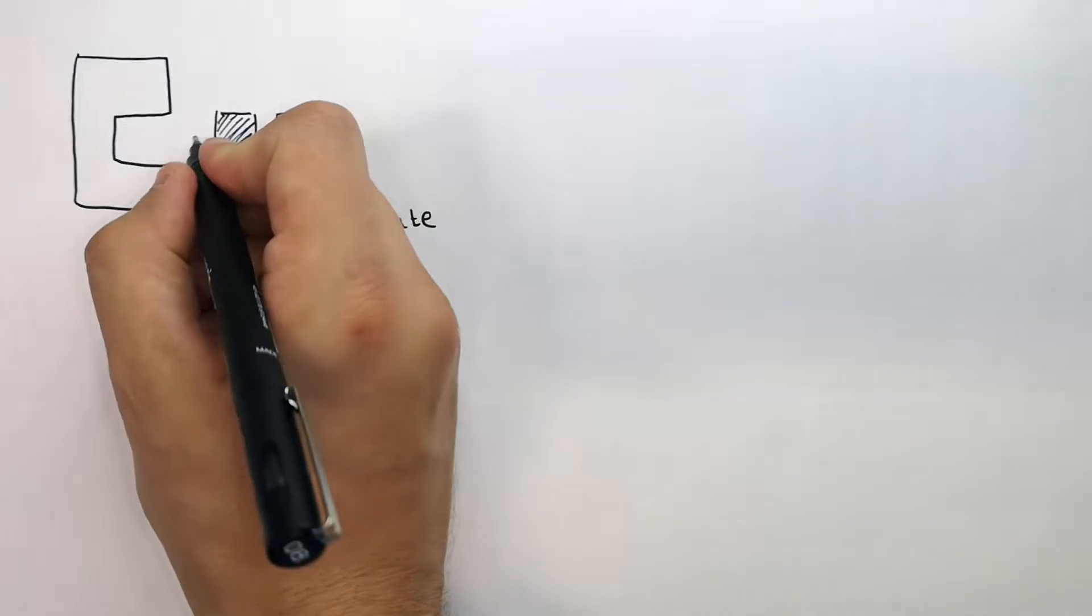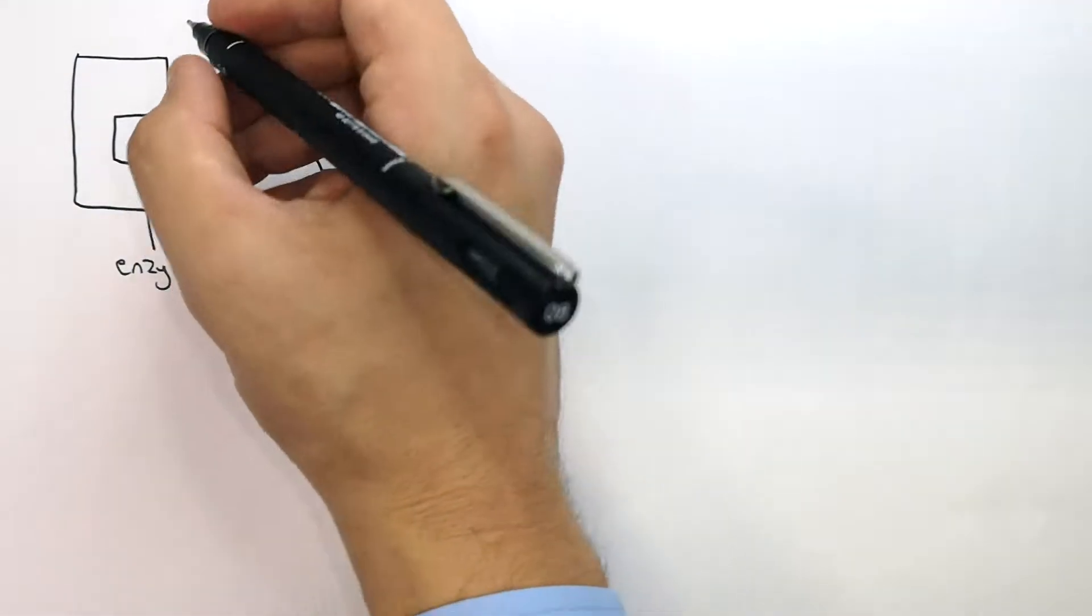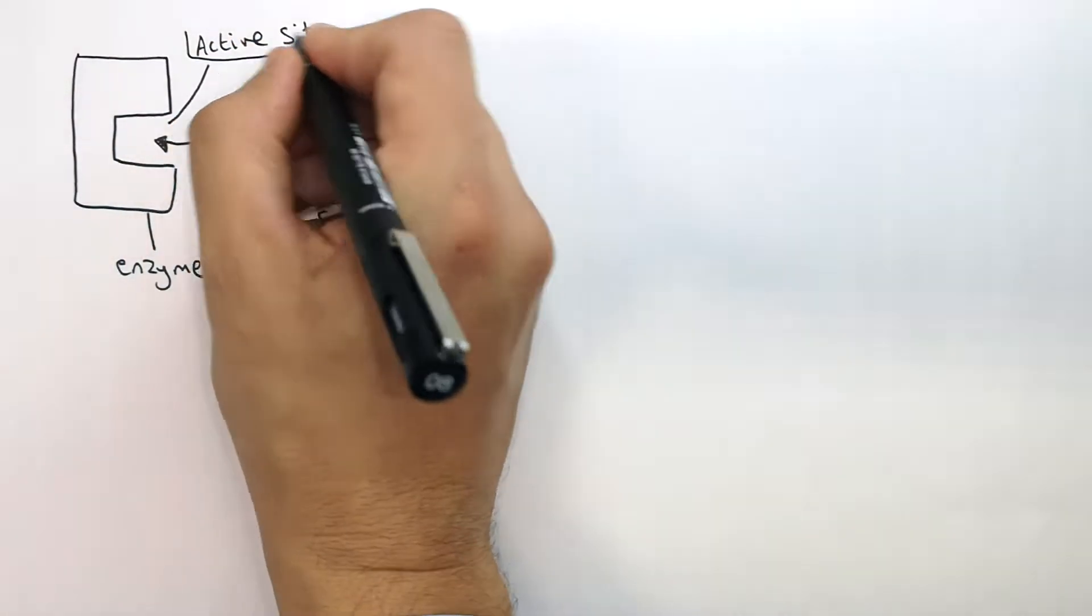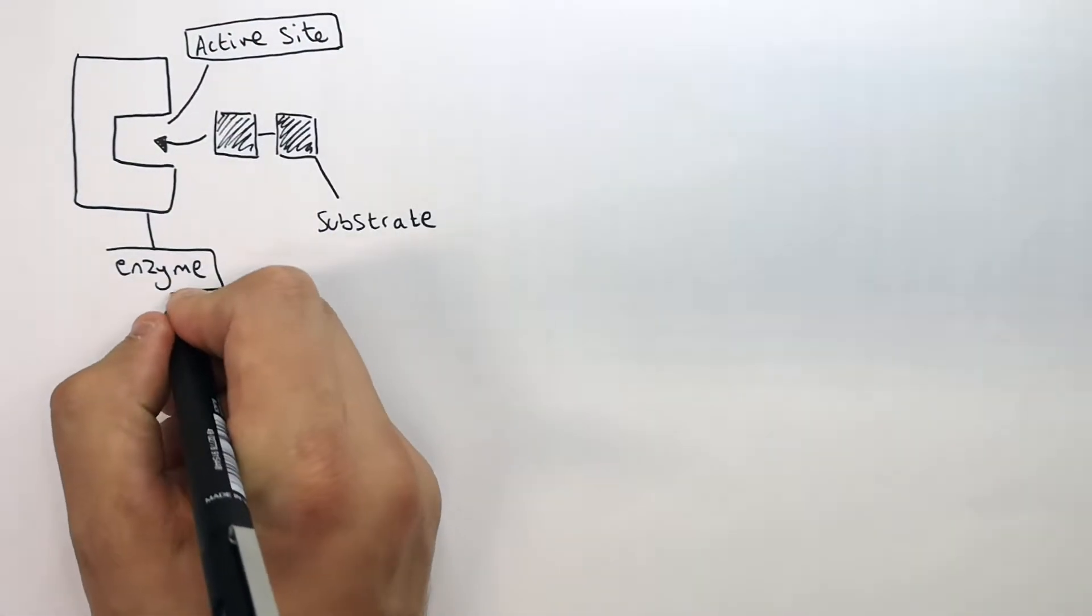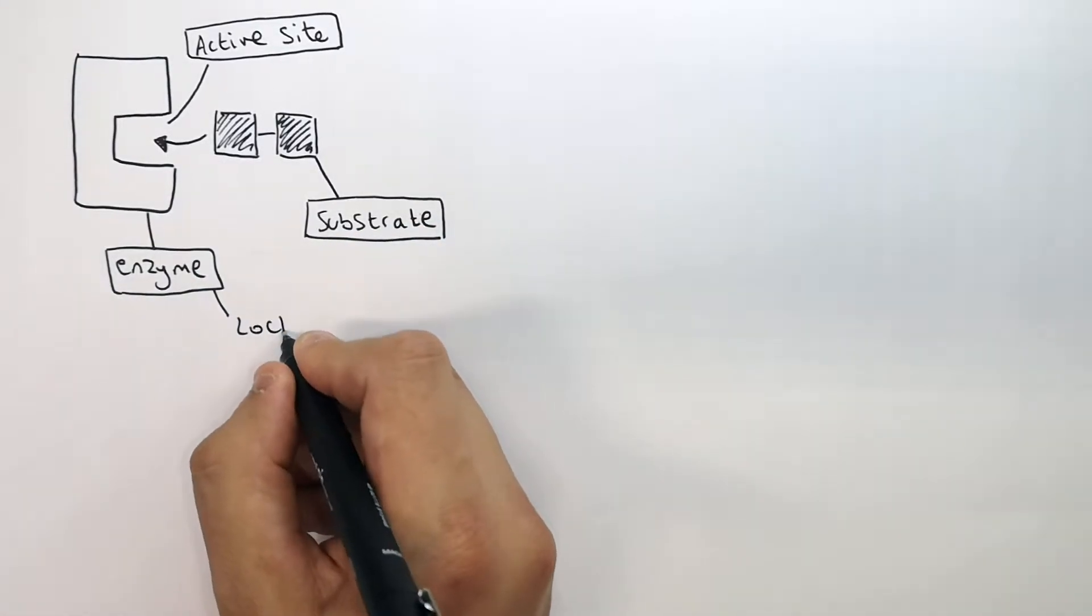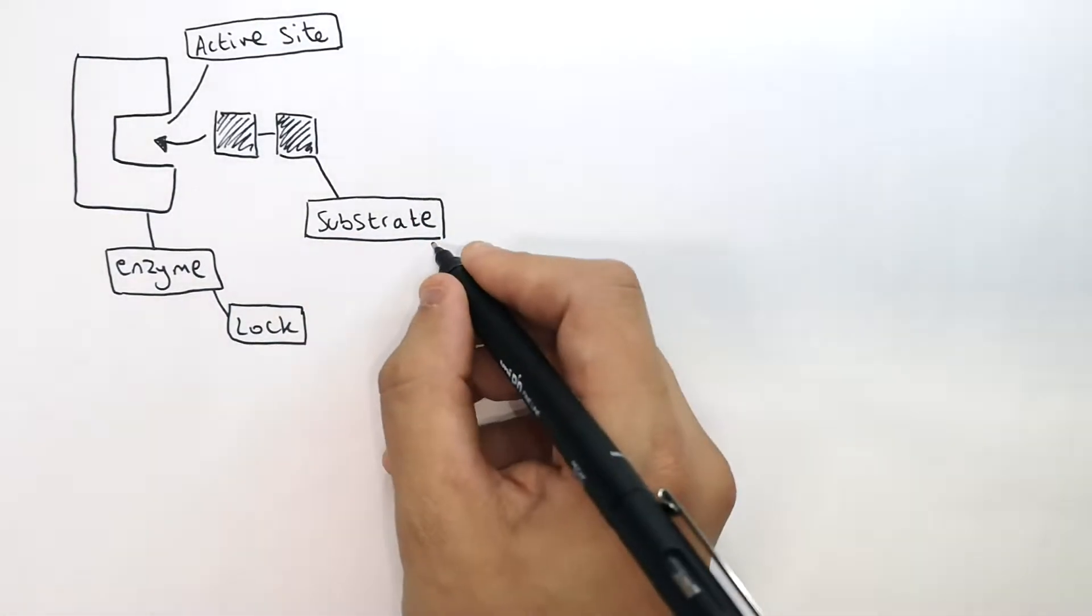The substrate will bind the active site of the enzyme. It's the active site that the substrate will bind. The enzyme is bound by the substrate. The enzyme is the lock and the substrate is the key.